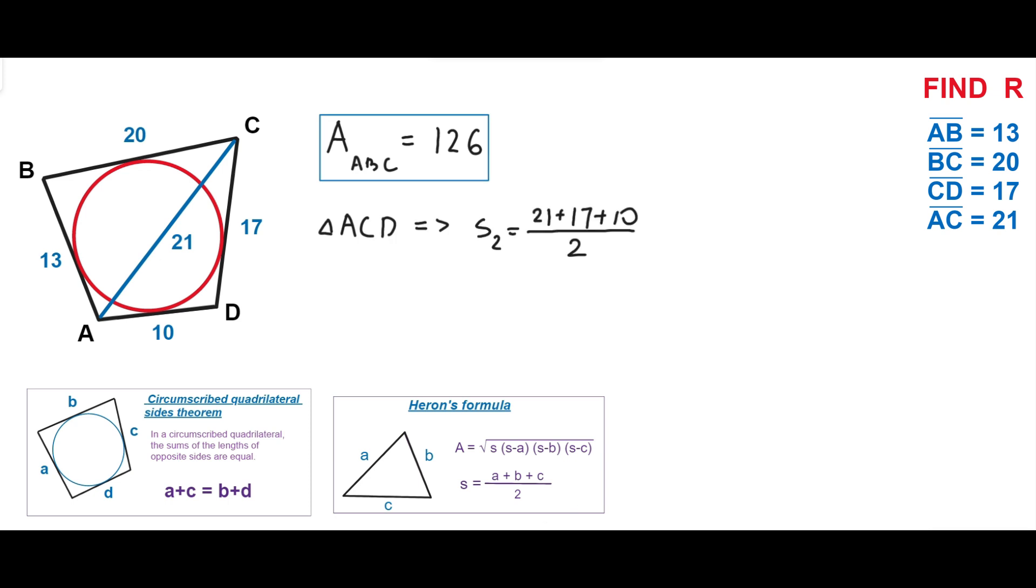For triangle ACD, the semiperimeter is (21 + 17 + 10) / 2 = 24. So the area of triangle ACD = √(24 × 14 × 3 × 7) = 84.